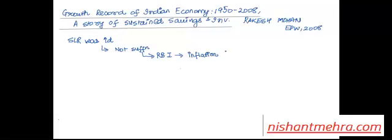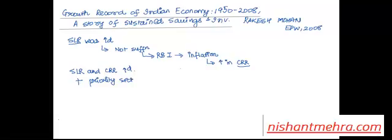There is a limit to which RBI can respond to this, and all of this was accompanied by an increase in the Cash Reserve Ratio. So both SLR and CRR were increased — they were already high. In addition to that, there was priority sector lending, where certain sectors were prioritized to be given loans.